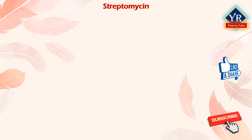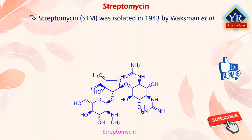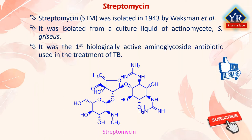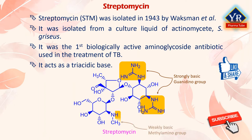The first drug of this class is streptomycin. Streptomycin, abbreviated STM, was first isolated in 1943 by Wachsman and co-workers. It was isolated from a culture liquid of actinomycete Streptomyces griseus. It was the first biologically active aminoglycoside antibiotic used in the treatment of tuberculosis. Streptomycin acts as a triacidic base through the effect of its two strongly basic guanidino groups and the more weakly basic methylamino group.